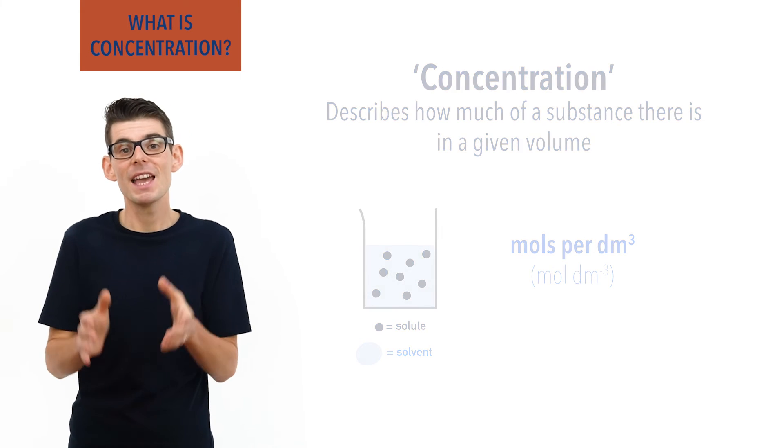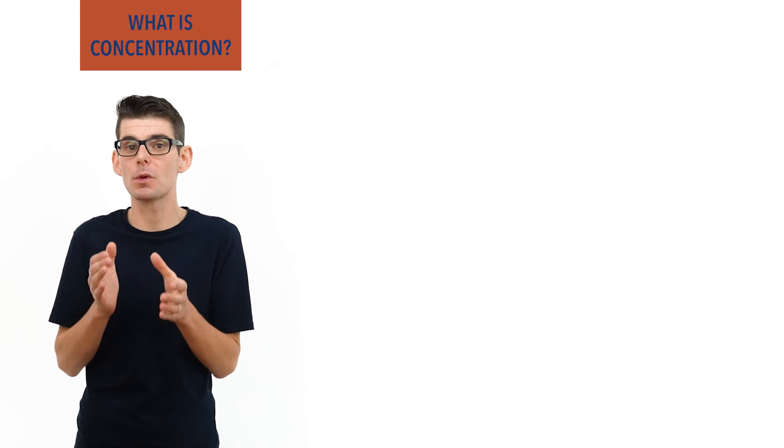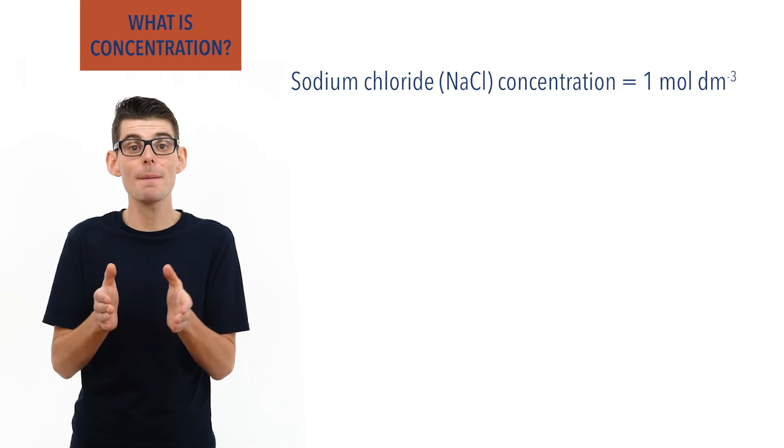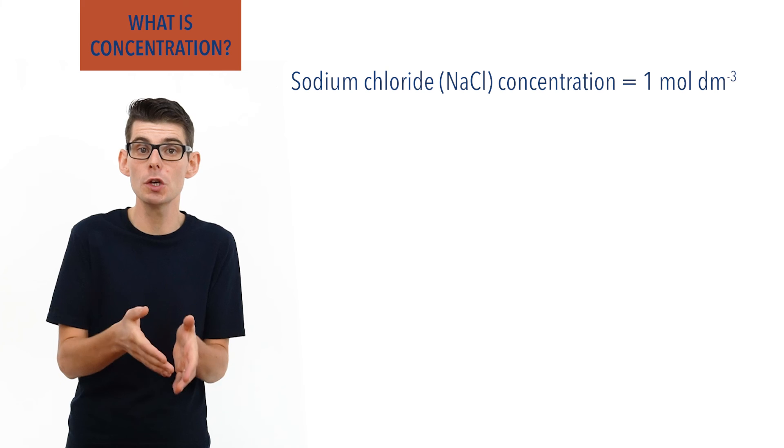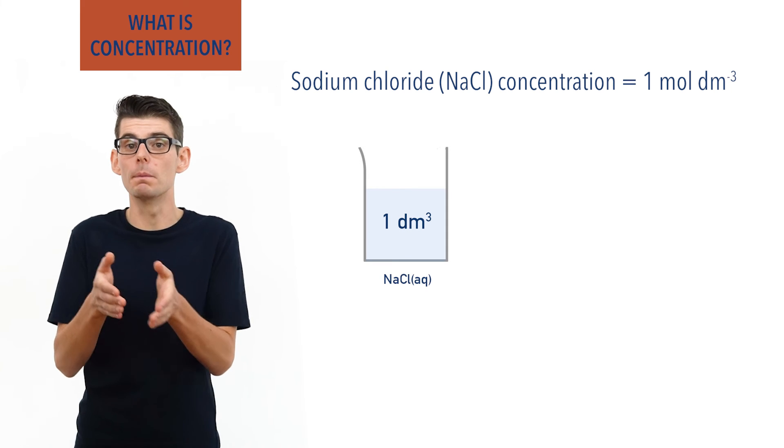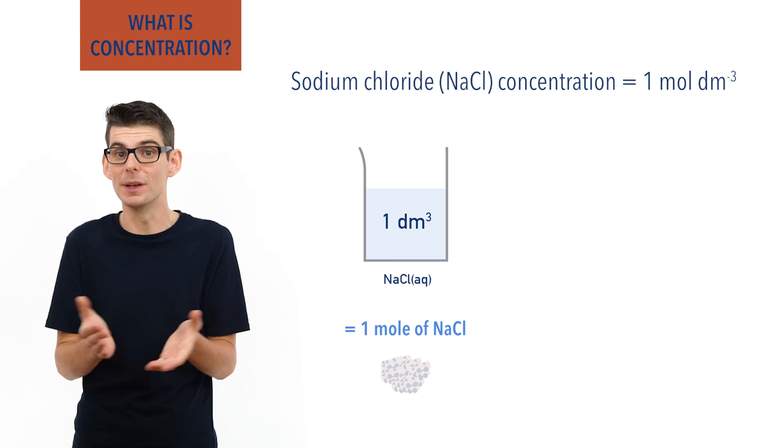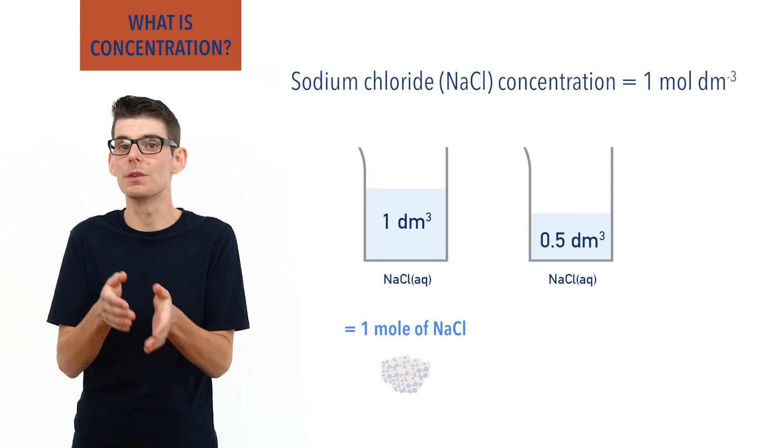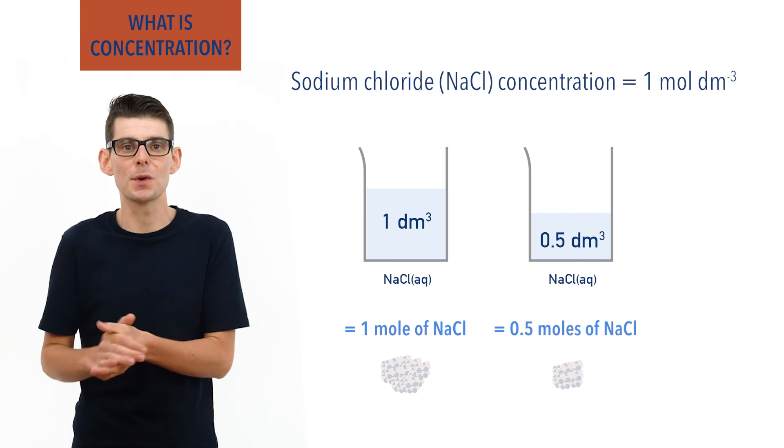For example, if the concentration of a sodium chloride solution is one mole per decimetre cubed, that means in one decimetre cubed of the solution, there would be one mole worth of sodium chloride. Equally, in half a decimetre cubed of the solution, there would be 0.5 moles worth of sodium chloride.